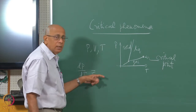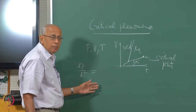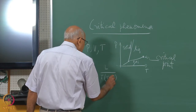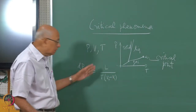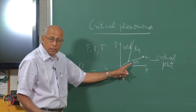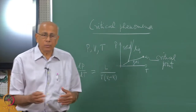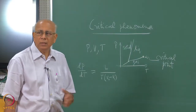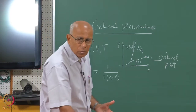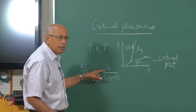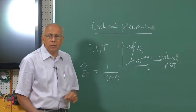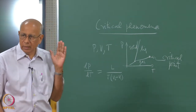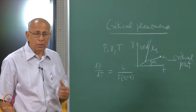The Clausius-Clapeyron equation tells you how the boiling point, freezing point, or similar quantities change as a function of pressure. The right-hand side involves the latent heat divided by the temperature times a volume difference: dP/dT = L / (T(V₂ − V₁)), where L is the latent heat, T is the boiling point, and V₂ − V₁ is the difference in specific volumes of the two phases. To go from liquid to gas you supply the latent heat of evaporation; coming back you extract that heat.